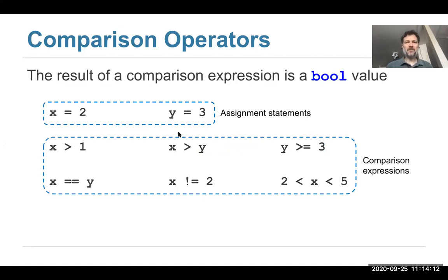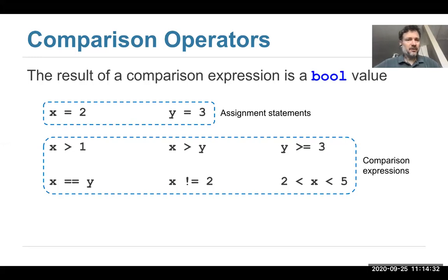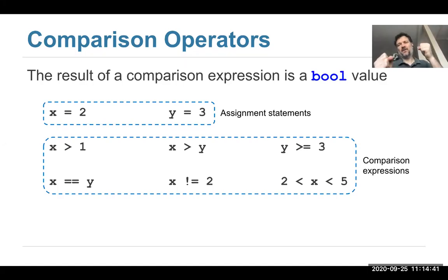First I want to look at comparisons. In Python you can compare two numbers — are they the same, or is one bigger than the other? This is particularly useful when you have a variable with a name and you want to compare those names. The result of a comparison is a bool, which means something that's either true or false — those are the only two possibilities.